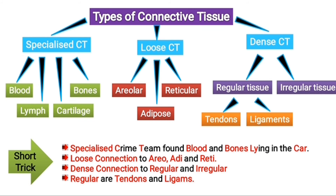Let's revise all the tricks together. First: specialized crime team found blood and bones lying in the car. Second: loose connection to Areo, Addi, and Ritti. Third: dense connection to regular and irregular. And finally: regulars are tendons and ligaments. This is the complete trick for types of connective tissue.